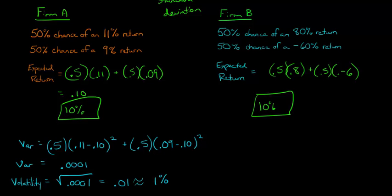So now, let's go ahead and let's calculate it for firm B. So for firm B, we're going to have 0.5 times that 80% return, that's an 8 there, 0.8, minus 0.1, the expected return, and then we'll square that, and when I'm talking about squaring, I should make it clear, we're squaring this right here. And then plus 0.5 times negative 0.6 minus 0.1, and then we're squaring this part right here.